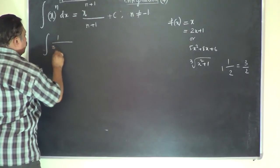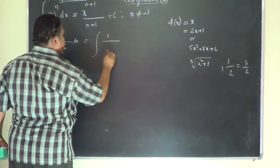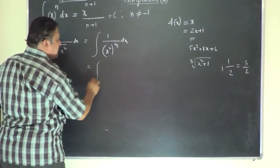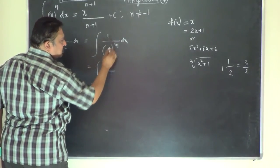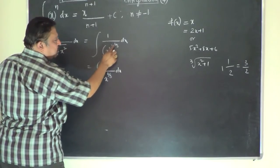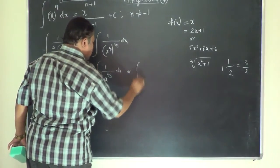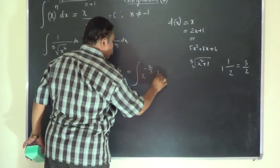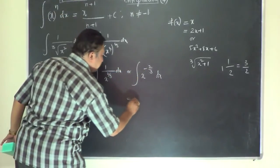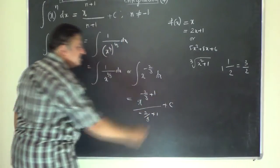For the integral of 1 over the cube root of x squared dx, rewrite it as 1 over x squared to the power of 1 by 3 dx. Using the rule that (a^m)^n = a^(mn), multiply 2 by 1 by 3 to get 2 by 3. So this becomes the integral of x to the power of minus 2 by 3 dx. Applying the power rule with n equal to minus 2 by 3 gives x to the power of minus 2 by 3 plus 1 divided by minus 2 by 3 plus 1 plus c.